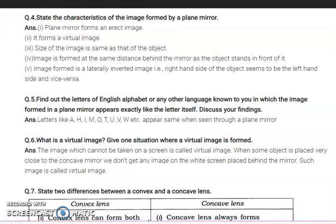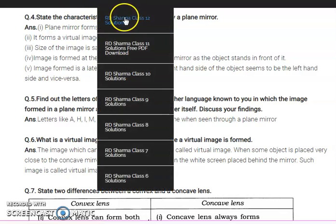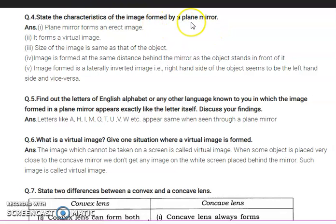What is your question number four? State the characteristics of the image formed by a plane mirror. Plane mirror ki characteristics you need to tell. I have made a slide with all the characteristics of plane mirror. Plane mirror ki image is erect, virtual image is formed, same size, same distance, and laterally inverted image - right appears left and left appears right. So these are all the properties you saw in the case of plane mirror.